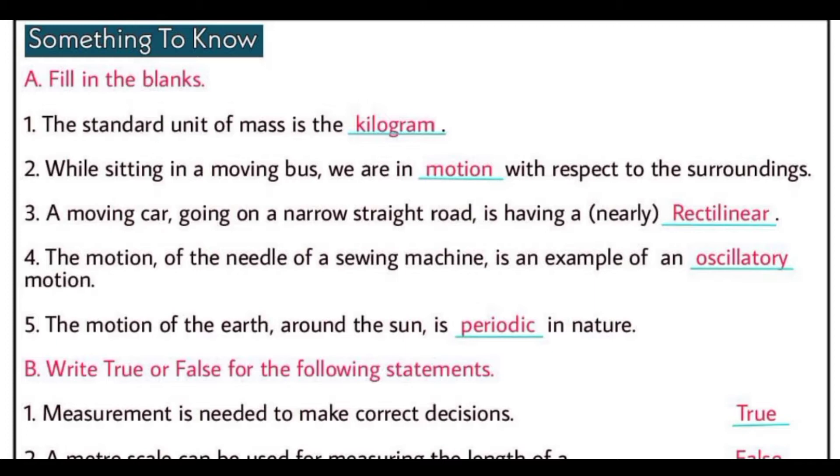Third one is, a moving car going on a narrow straight road is having a nearly rectilinear motion. The motion of a needle of a sewing machine is an example of an oscillatory motion. Sewing machine ka jo needle hai, ye upar neeche hai, ye upar neeche ek hi path pe baar baar aata jaata hai, toh jiski karan uska motion oscillatory motion hota hai.